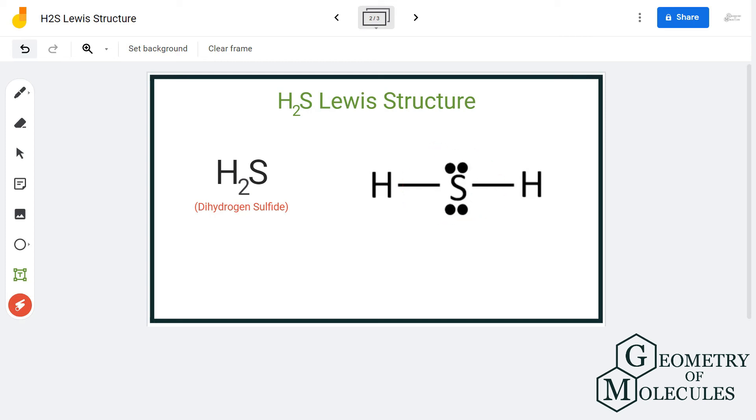These two pairs of electrons are non-bonding pairs, also known as lone pairs of electrons. The octets of all these atoms are complete, so this is the Lewis structure for H2S.